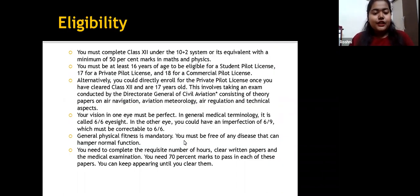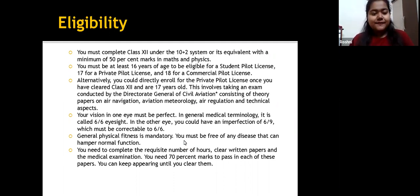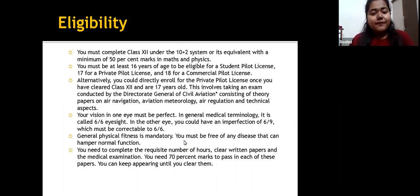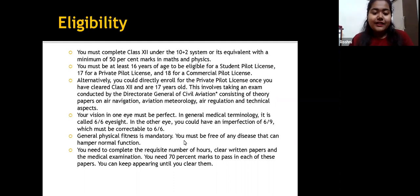Eligibility: You must complete class 12 under the 10+2 system or its equivalent with a minimum of 50% marks in math and science, including physics. You must be at least 16 years of age for a student pilot license, 17 for a private pilot license, and 18 for a commercial pilot license. Alternatively, you could directly enroll for the private pilot license once you have cleared class 12 and are 17 years of age.